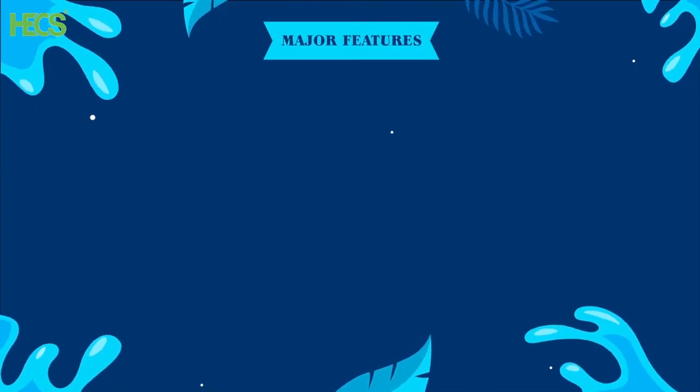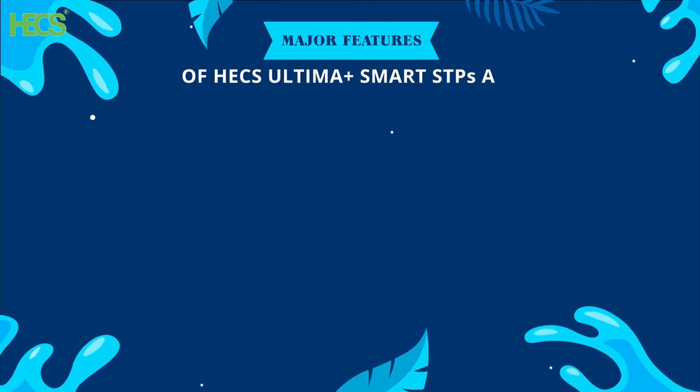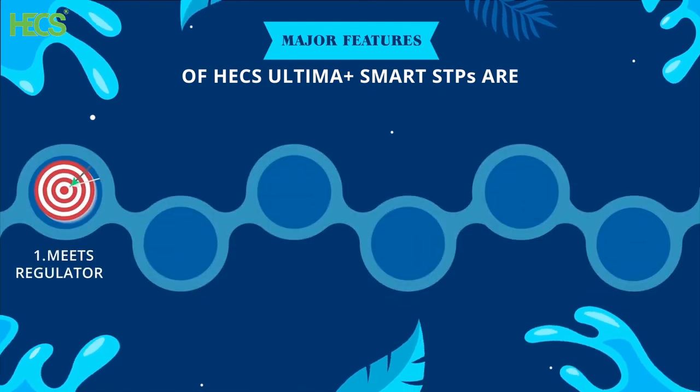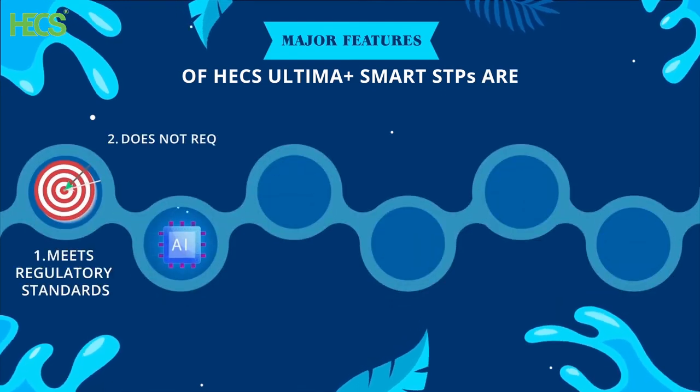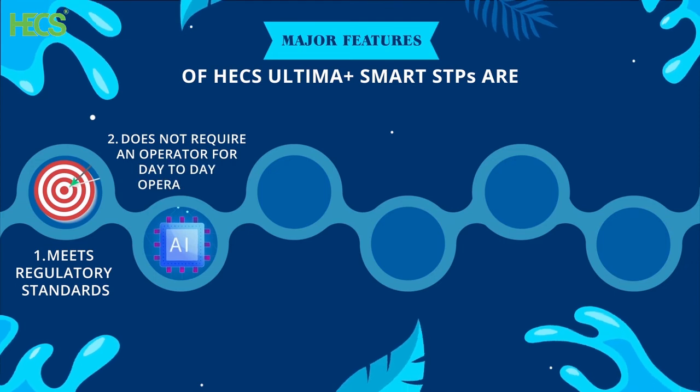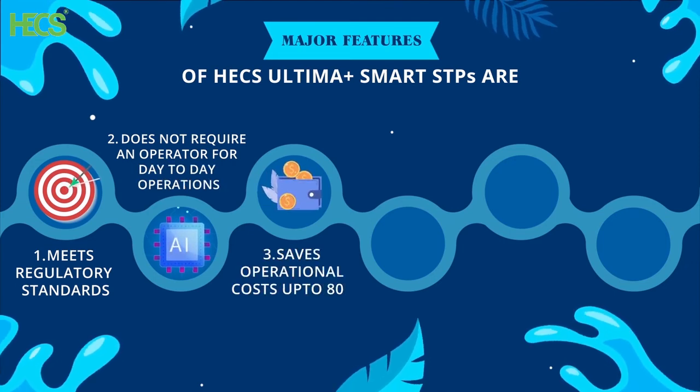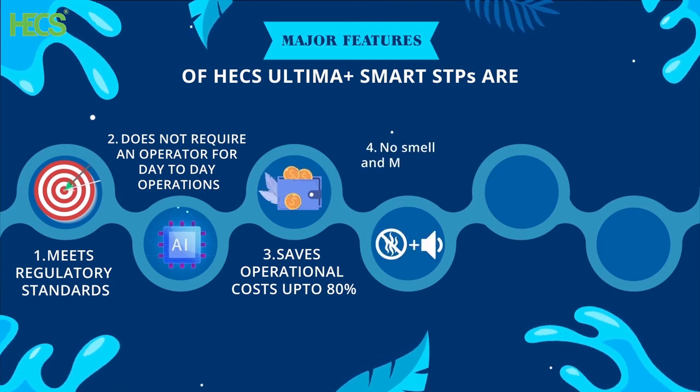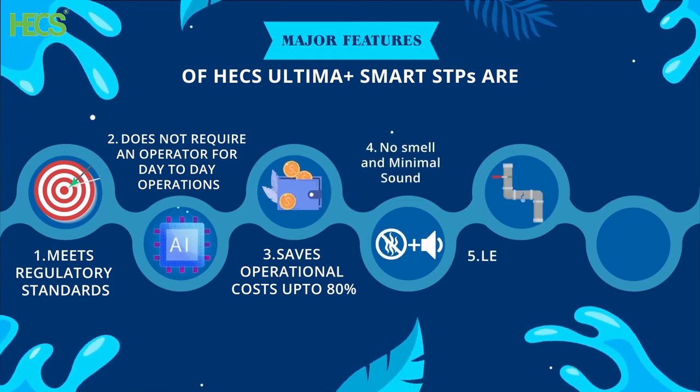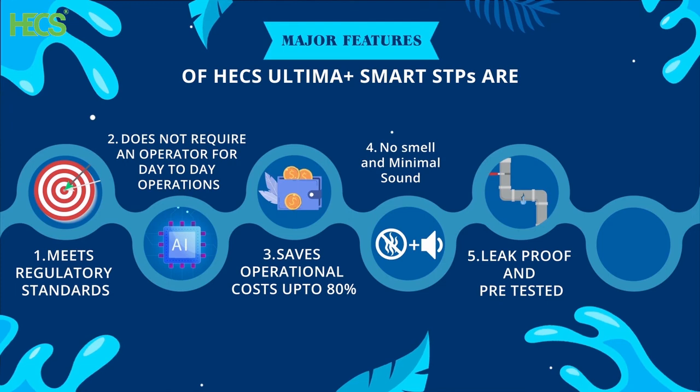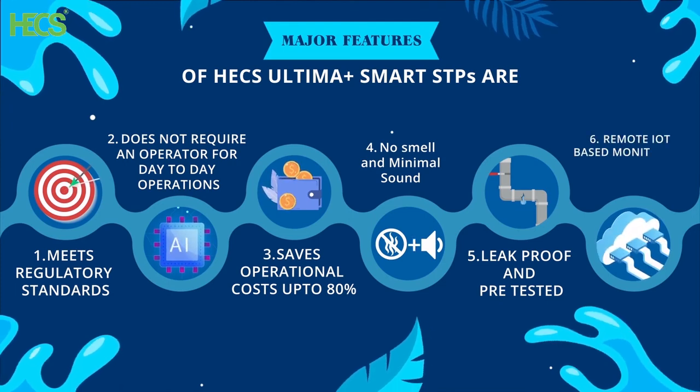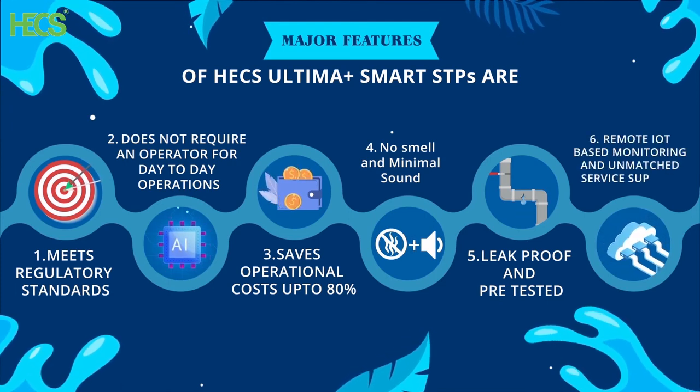Some of the major features of HEC's Ultima Plus Smart STPs are: meets regulatory standards, does not require an operator for day-to-day operations, saves operational costs up to 80%, no smell and minimal sound, leak-proof and pre-tested, remote IoT-based monitoring and unmatched service support.